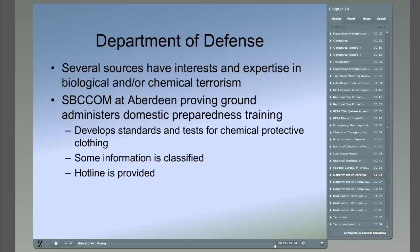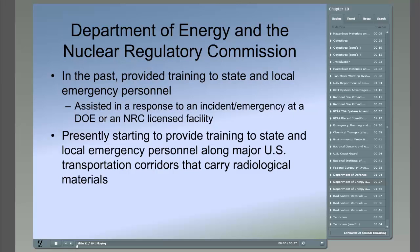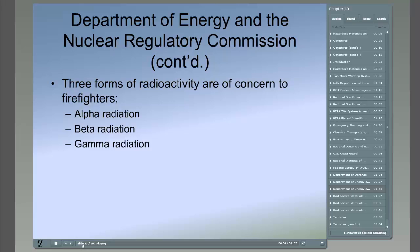The SBCCOM also maintains a hotline providing real-time referrals that can be utilized by local agencies. In the past, the Department of Energy and the Nuclear Regulatory Commission have provided training to state and local emergency personnel who would assist in a response to an incident at a DOE or NRC licensed facility. More recently, the DOE has started providing training to state and local emergency personnel along major U.S. transportation corridors that carry radiological materials. There are materials which undergo spontaneous transformation and release radiant energy or atomic particles. Three forms of radioactivity that are a concern to firefighters are alpha radiation, beta radiation, and gamma radiation.